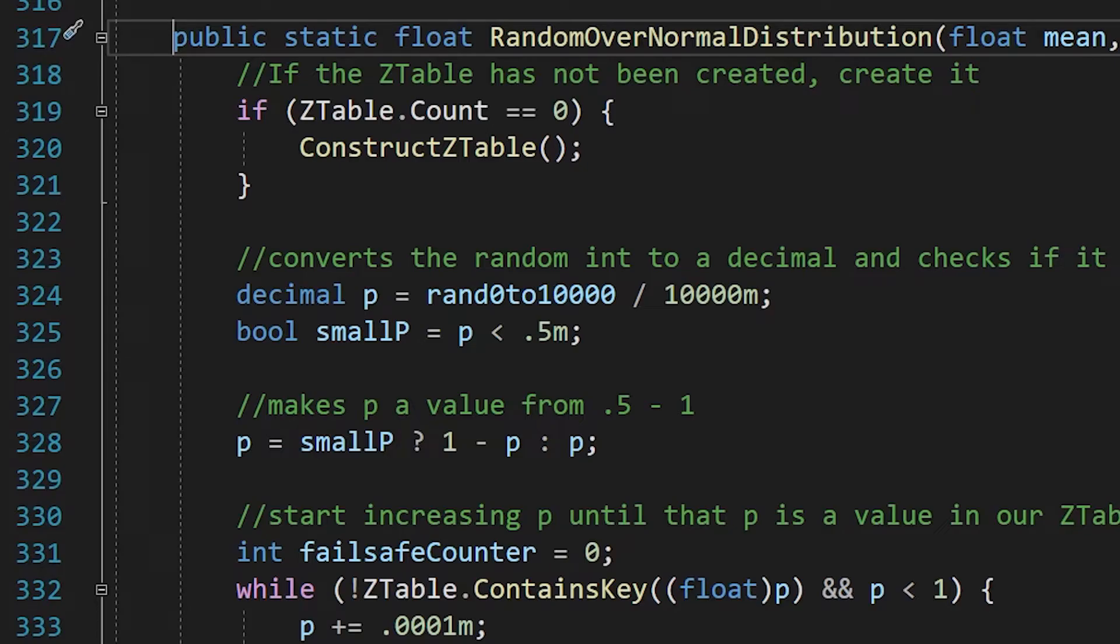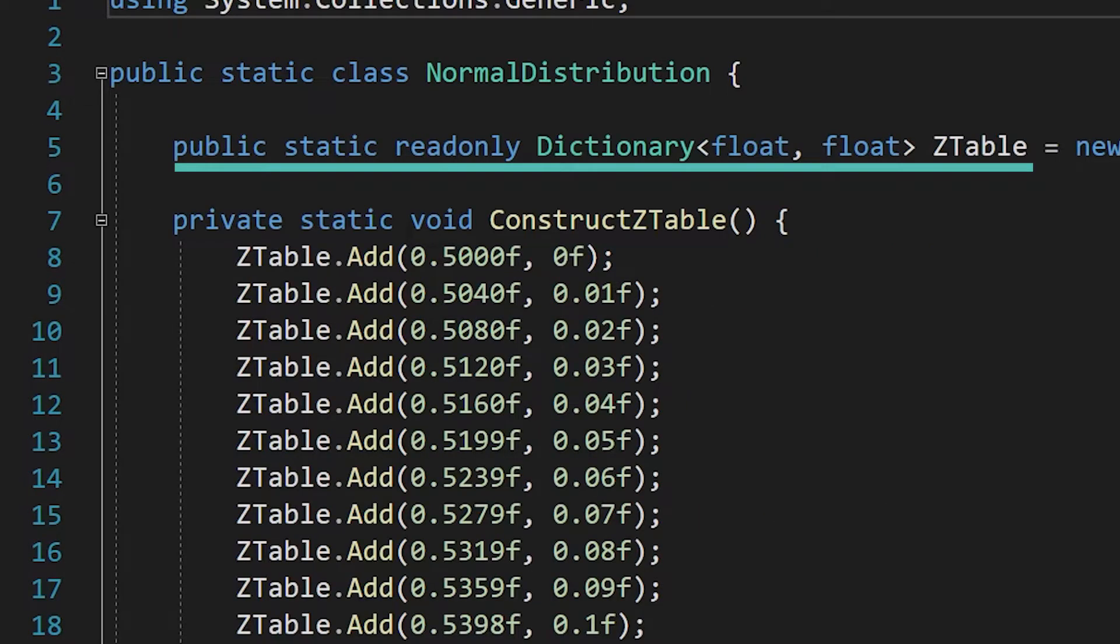The first thing that the function does is create a z-table if it hasn't been created already. I use the dictionary for the z-table because they're fast, and I can associate one p-value acting as the key with one z-score acting as the value.